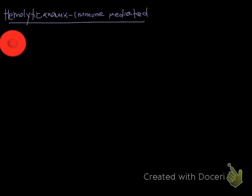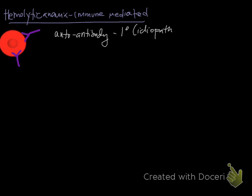Of the three main causes of hemolytic anemia we're going to focus on in class, immune-mediated is the last one we're going to talk about, and it is relatively more common than the others. This immune-mediated etiology is due to antibodies directed at red blood cells. These antibodies can be auto-antibodies, meaning the body itself has started making antibodies against red blood cells, and this can be due to primary reasons — usually idiopathic — and this is most common in dogs.